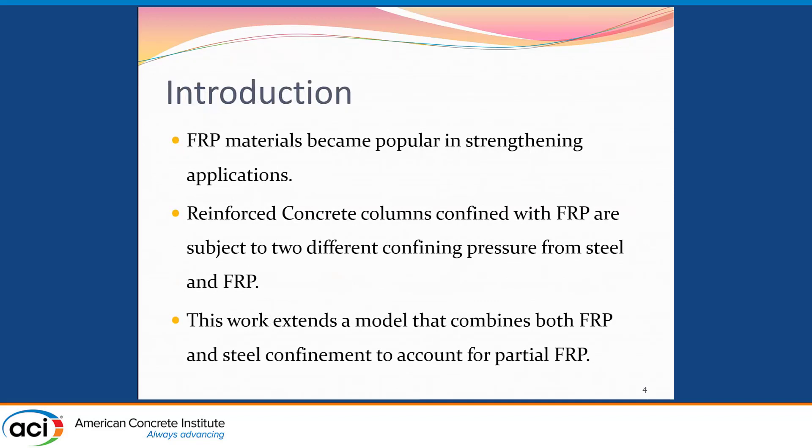To start with, as most of you probably know, FRP materials have grown in popularity over the years and are now used in many retrofit, renovation, and strengthening applications in concrete construction. One of the applications is the one that we are looking at here, which is strengthening of concrete columns and piers. When you have a concrete column that's confined with FRP, it's actually under the effect of two confinement systems. The first is the internal steel confinement coming from the ties that are spaced throughout the section. The other is the FRP wraps that are also providing external pressure that helps in confining the concrete. The combination of these two contributes to the increase of the axial strength of the cross section due to the active pressures. As mentioned earlier, the work here intends to extend the model to account for the partial FRP confinement.